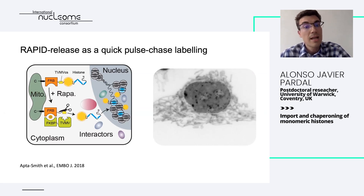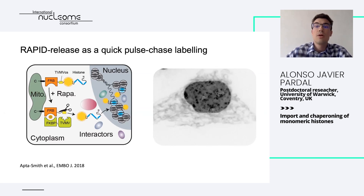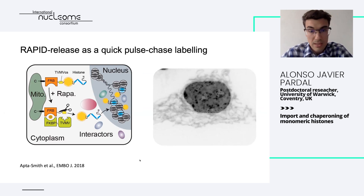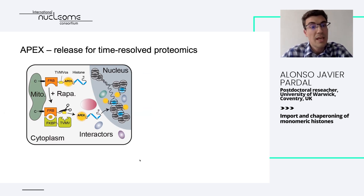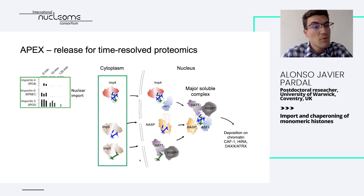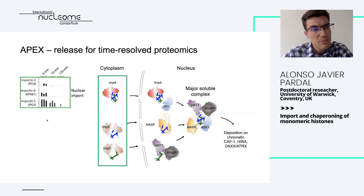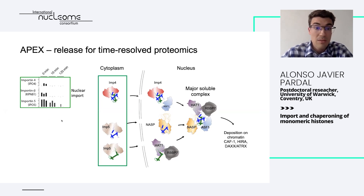One benefit of this approach is that any protein or enzyme tag can be added — for instance an APEX tag — which can be used for BioID and time-resolved proteomics. We did do that, and the results showed, to our great satisfaction and some surprise, that importin-5 was actually a stronger binder over importin-4, giving us great confidence in our model.